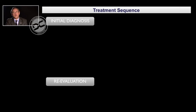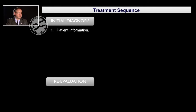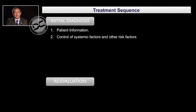Let's evaluate the treatment sequence and how we are going to accomplish these objectives. First, we need to do an initial diagnosis of the patient's periodontal status. We also need not only to prevent and treat the disease but also to promote health. It is very important to start with patient information and to understand the patient's medical history, in order to control the systemic factors and other risk factors that could influence the periodontal disease.